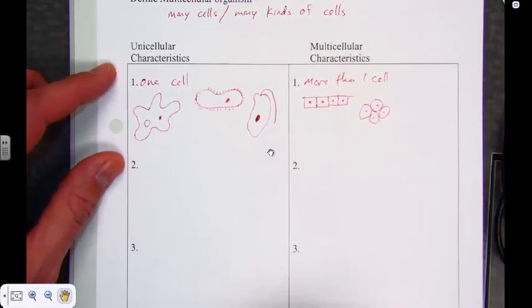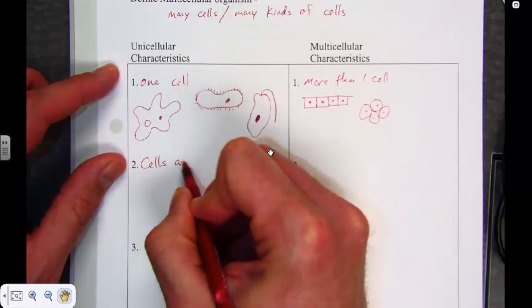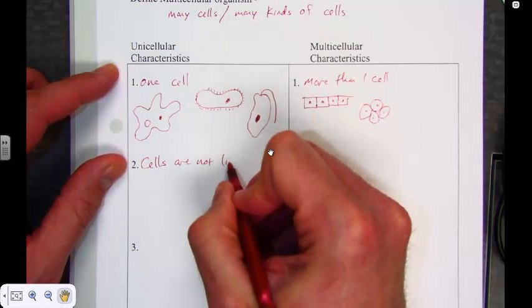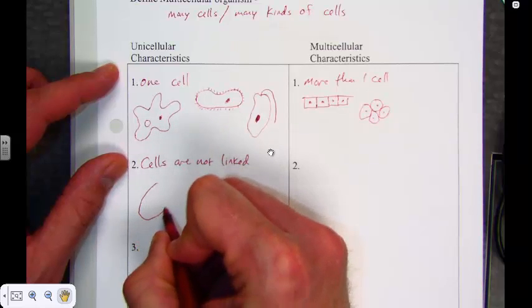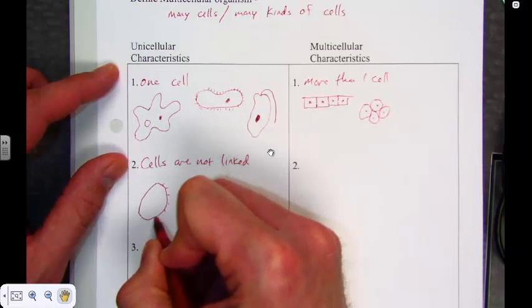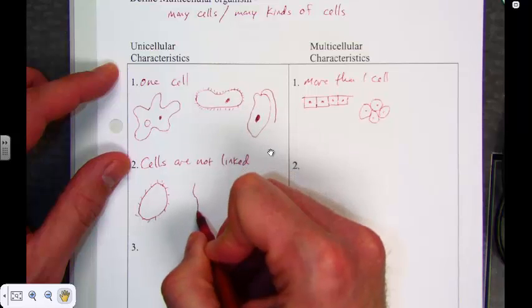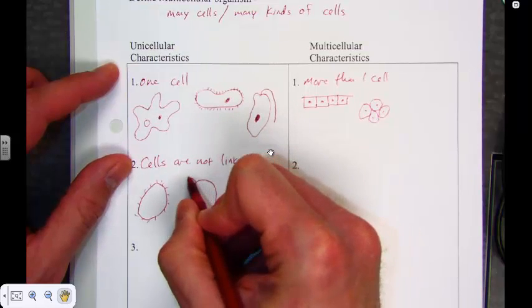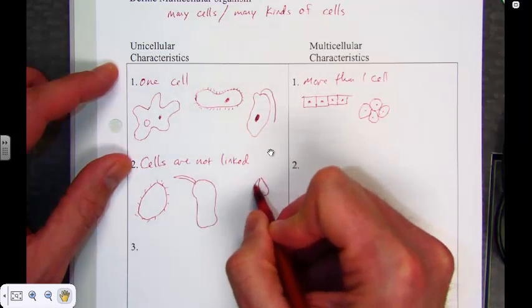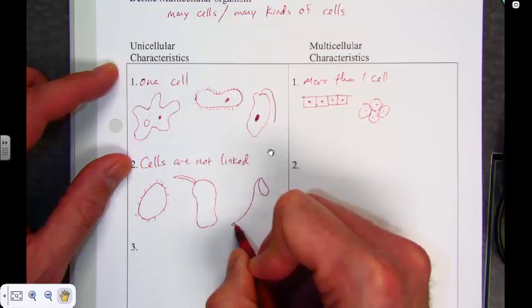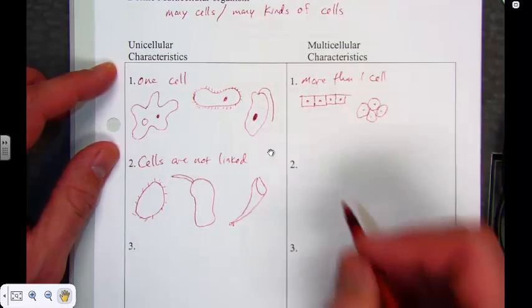Another characteristic of the unicellular organism is that these cells are not linked. In other words, they are not connected together. They are independent from one another. So wherever the cell is, even though it may be in a community with another large number of unicellular organisms, they are not connected together. Regardless of the kind of organism that it is, it is not going to be connected with some of the other ones.